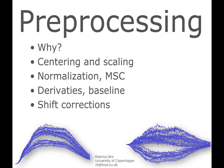In this set of videos we're going to talk about pre-processing of multivariate data in relation to chemometric modeling. We're not going to go through all possible types of pre-processing, but we'll select some important ones often used in chemometrics. We'll start with centering and scaling, then continue with normalization, scatter correction, derivatives, baselining, and a little bit about shift correction.